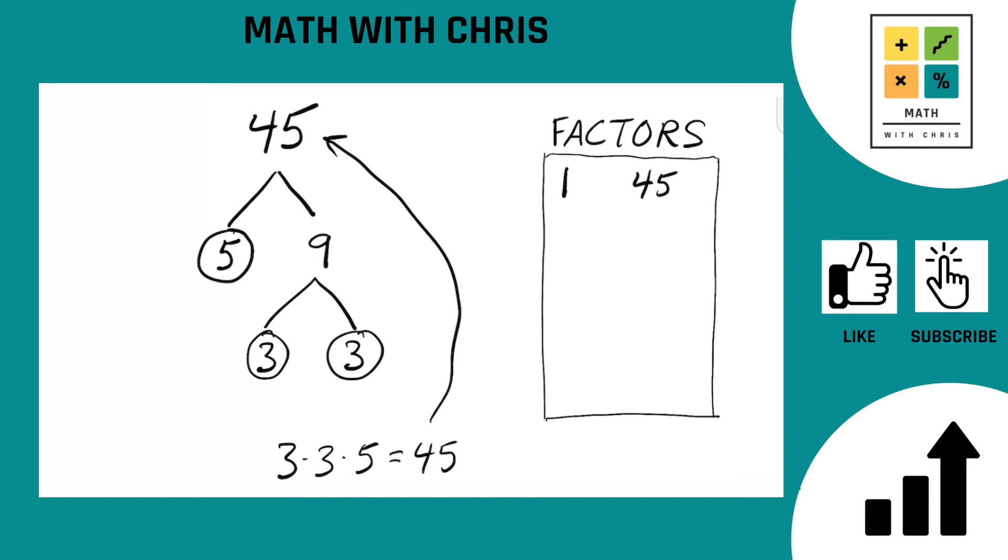So now we add the prime numbers that we found to our factor bank. That's 3 and 5. And any number we hit along the way also gets added. So along the way on the tree we hit a 9 at one point. So 9 is a factor of 45.